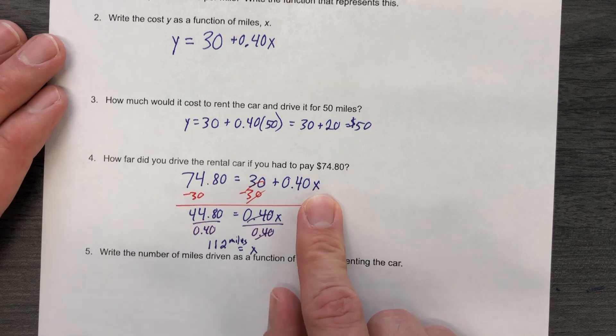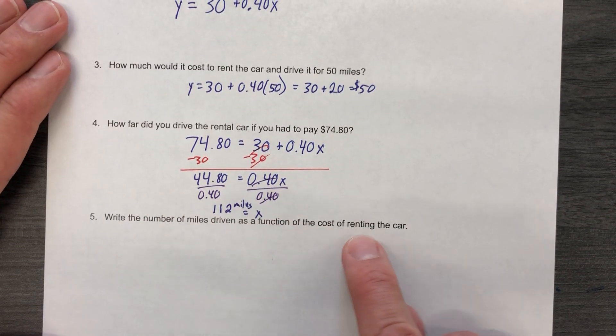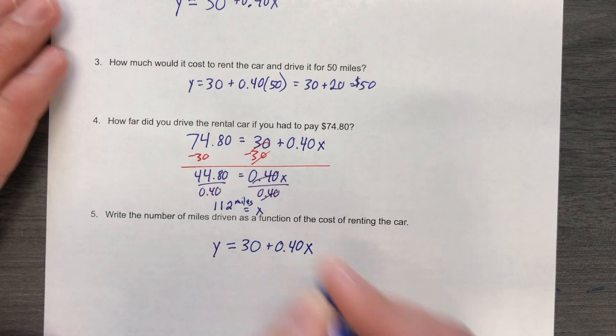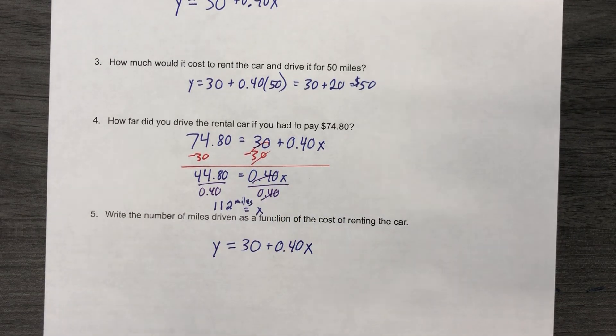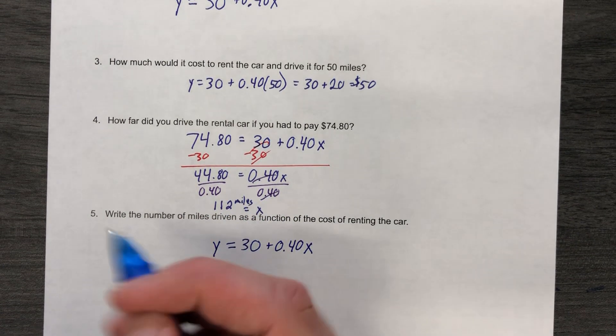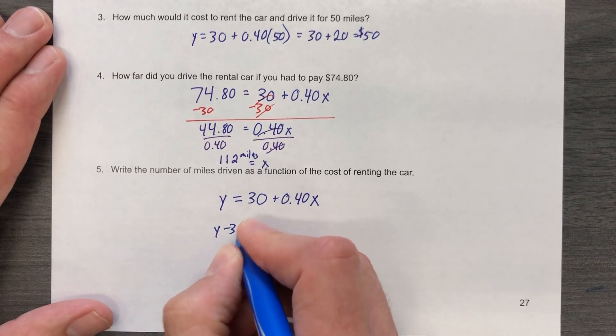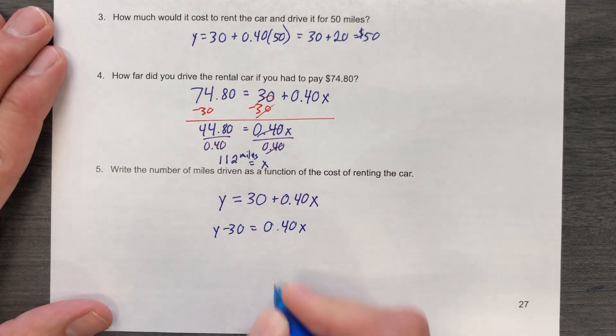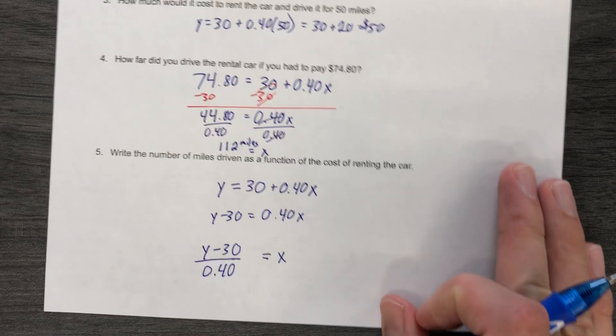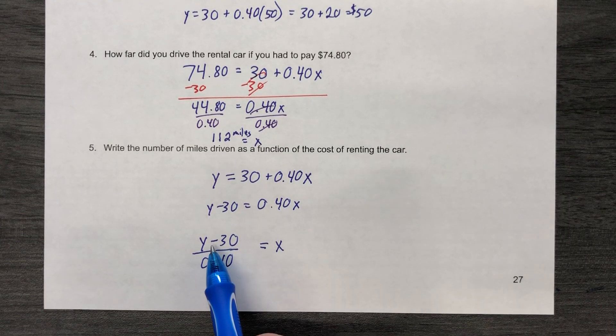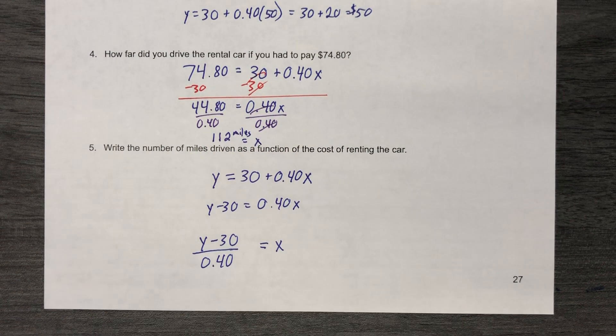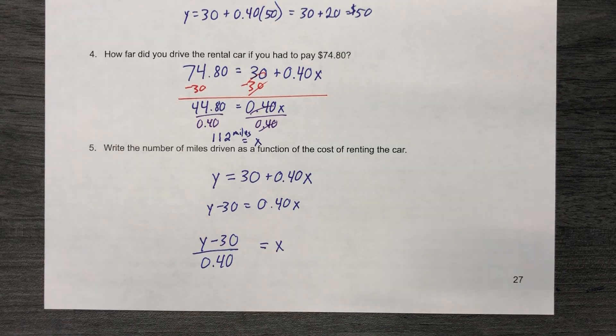We want to solve this for X. So, it says write the number of miles driven as a function of the cost of renting the car. So, let's go here instead. And now they're saying if you had to solve for X over and over and over, you'd get sick of it, right? Because you'd subtract 30, divide by 0.4. Subtract 30, divide by 0.4. Subtract 30, divide by 0.4. For crying out loud, can we just do it from here? Subtract 30, divide by 0.4. So, anytime I hand you a dollar amount and say, how far did you drive the car? You could plug it in right here and you don't have to go through this process over and over. That is the point of inverses. This is not the way inverses are necessarily represented, but this is the point that we're solving for the other variable. It's a literal equation.